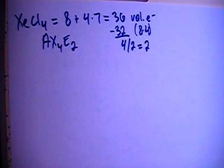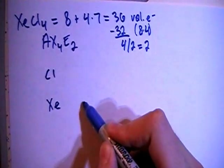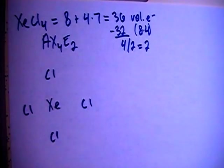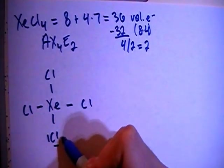So let's go ahead and draw this structure. You have the xenon in the center surrounded by the 4 chlorines. Now let's single bond all of the chlorines, and then fill in each of their octets.